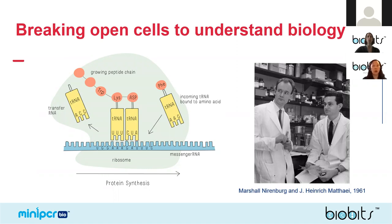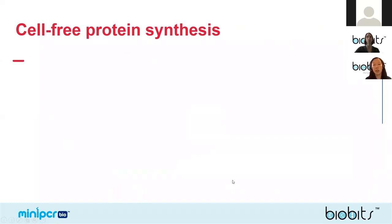Not only did this work show how the central dogma of biology worked, it was one of the first examples demonstrating that live cells are not needed to carry out transcription and translation — you can use a cell-free system, just the molecular machinery inside the cells. Subsequent experiments showed that the molecular machines like polymerases for transcription and ribosomes for translation are not essential to be inside the cell in order to function.